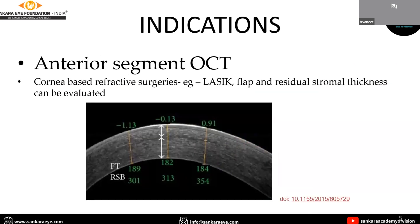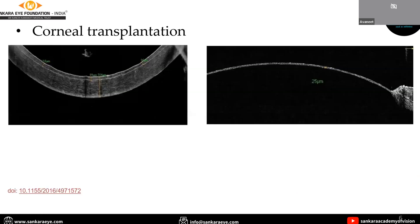Coming to indications of OCT, anterior segment OCT can be used in cases like cornea-based refractive surgery such as LASIK. We can see the flap thickness, here it is in the range of 90 to 180 microns, and the residual bed is 300 to 350 microns. In corneal transplantation cases such as DSAEK, we can see the donor tissue size and thickness.